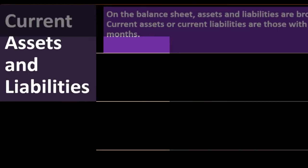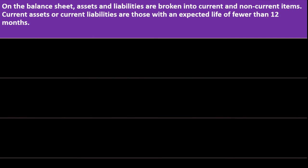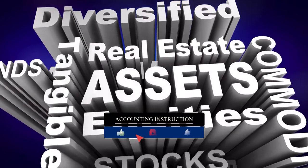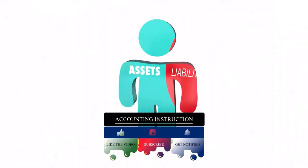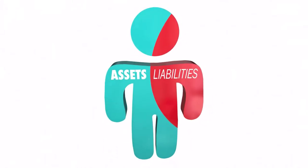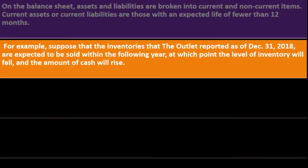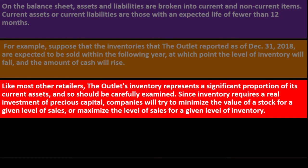On the balance sheet, assets and liabilities are broken into current and non-current items. Current assets and liabilities are those with an expected life of fewer than 12 months. Current liabilities are coming due shortly, so you need enough current assets to pay them — that's why we use that 12-month timeframe. For example, The Outlet's inventories as of December 31, 2018, are expected to be sold within the following year, at which point inventory will fall and cash will rise.